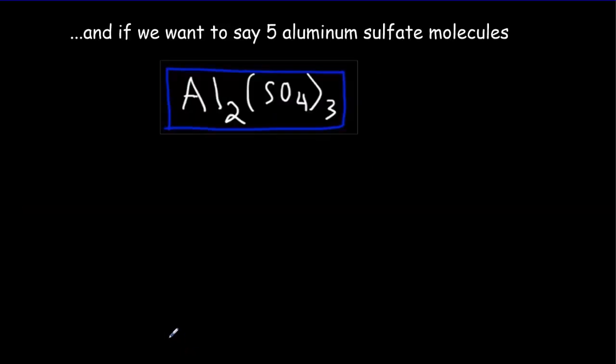And now if we wanted to count up the number of each type of atom in five molecules of aluminum sulfate, we'd put that coefficient of five out front. We'd count up the aluminum where we'd have two atoms per molecule times five molecules, so we'd get 10 atoms.